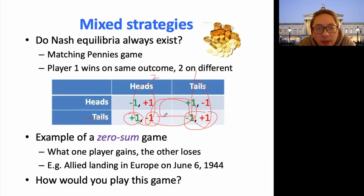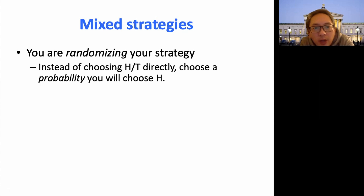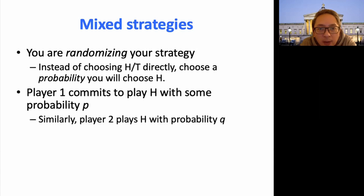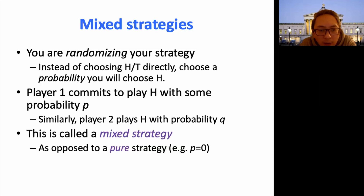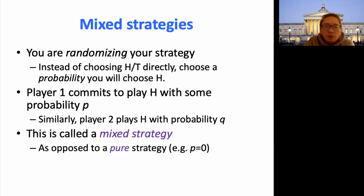So how would you play this game? What would be your prediction about the outcomes? What you can do is randomize your strategy. In other words, you're not going to be choosing H or T — hat or tail — deterministically. Instead, you choose a probability of playing hat or tail. Player one chooses H with a certain probability P, and player two equally chooses hat with probability Q. This is called a mixed strategy. A mixed strategy always includes a pure strategy, because you can set one of those probabilities to zero, and you're basically choosing one action deterministically.